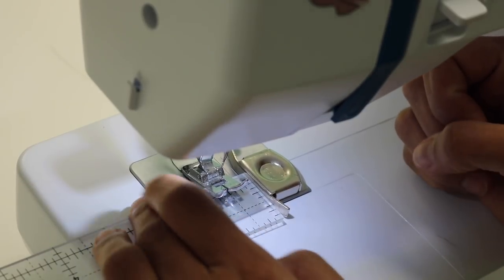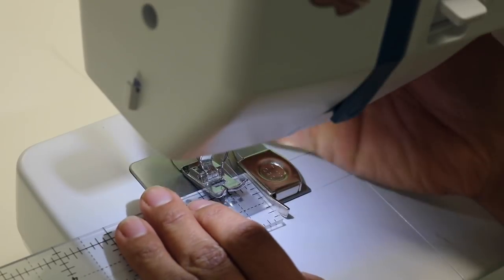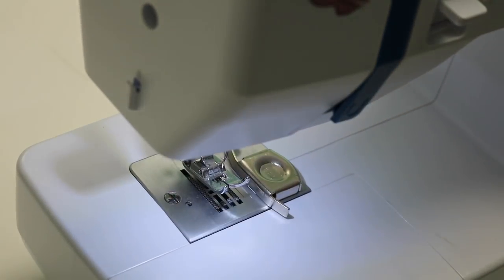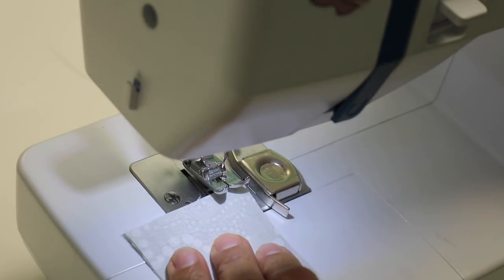Alright, so now let's double check it because we always want to do some type of a test stitch to make sure. Now I can lift my presser foot, remove my ruler, and we're going to test stitch this just to make sure that it's that setting on some scrap fabric. Alright.